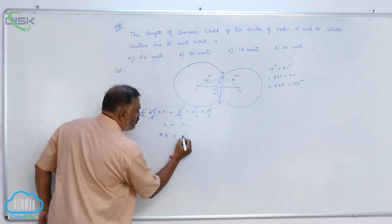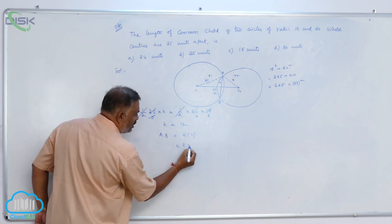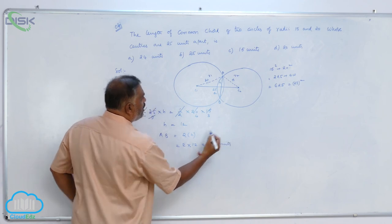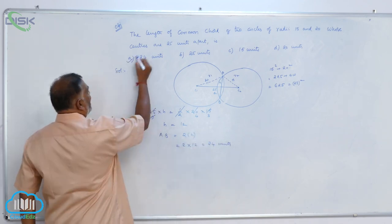The chord AB is equal to 2 times H, 2 into 12, that is 24 units. So according to the problem, option A is correct.